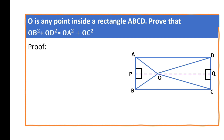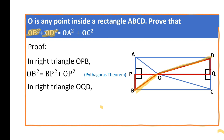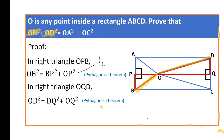Now let us prove. Let us concentrate on OB² of the LHS. OB belongs to the right triangle OPB. So OB² = BP² + OP² because of the Pythagoras theorem. This is equation 1. Now let us concentrate on OD². OD is the hypotenuse of right-angle triangle OQD. In right-angle triangle OQD, OD² = DQ² + OQ². This is equation 2.